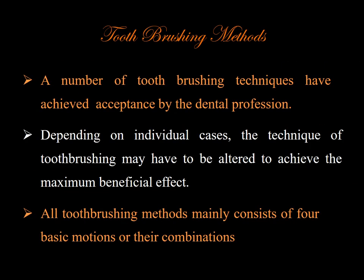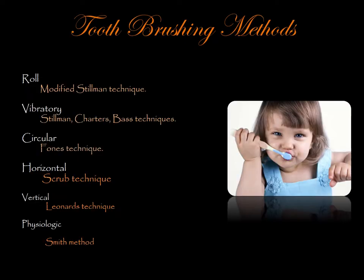Toothbrushing methods: a number of techniques have achieved acceptance by the dental profession. Depending on individual cases, the technique may have to be altered to achieve maximum beneficial effect. All toothbrushing methods consist of four basic motions or combinations. They are classified as: roll method, modified Stillman technique, vibratory techniques (Stillman, Charters, Bass), circular Fones technique, horizontal scrub technique, vertical motion Leonard's technique, and the physiologic Smith method.